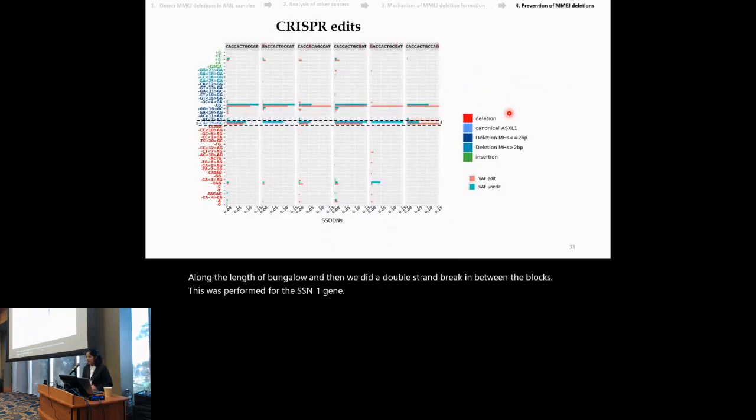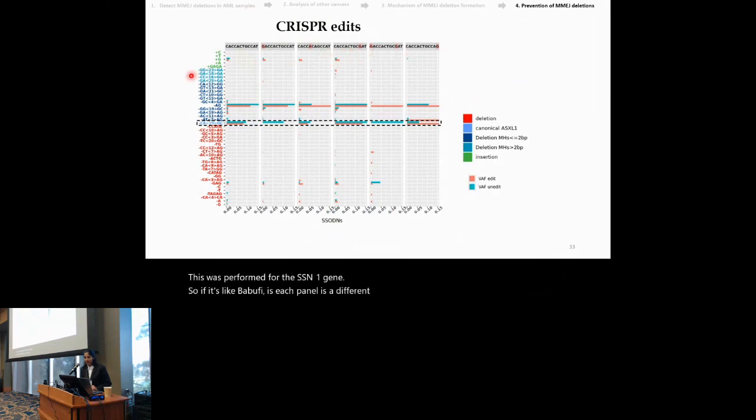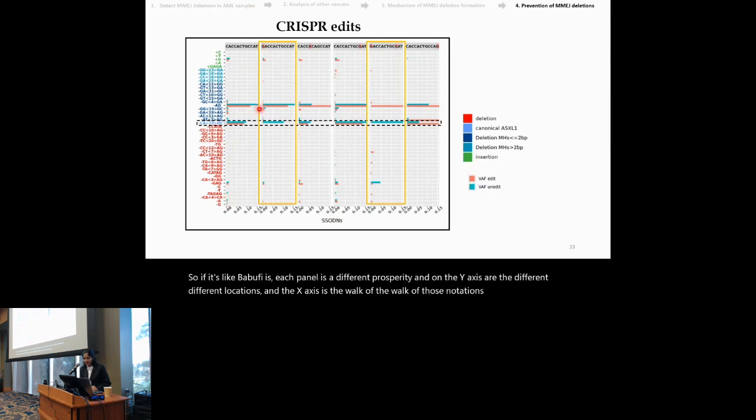So, in this slide, what we see is each panel is a different CRISPR edit and on the y-axis are the different mutations and on the x-axis is the variant allele frequency of those mutations. We see that certain edits lead to reduction in the prevalence of MMG deletions.